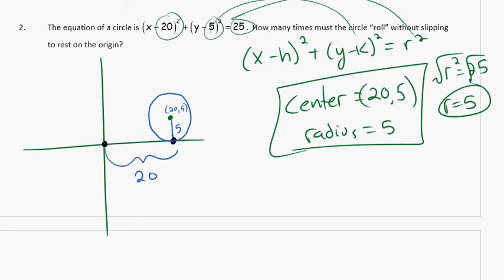Well, if we roll it once around, a complete rotation, we're going to be rolling it the length of the circumference. If we can see this circumference, it's going to be mapped out onto the axis as it rolls.